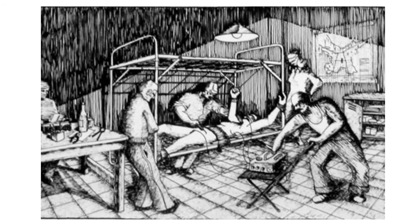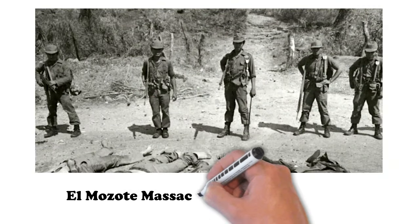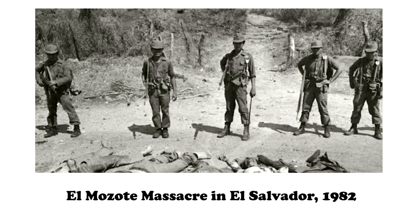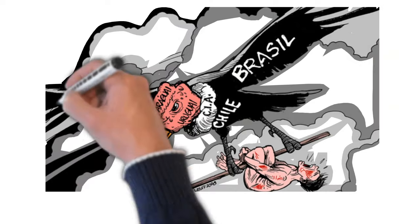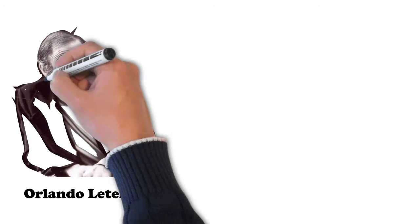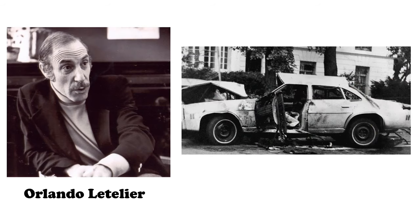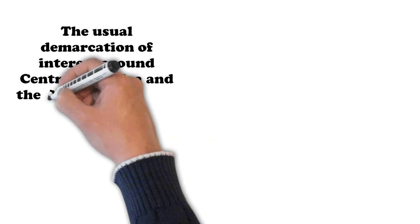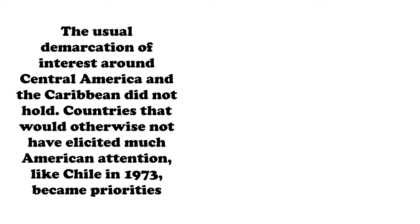It was during this period that some of the worst massacres in Latin American history took place, such as the San Patricio Church Massacre in Argentina in 1976, the El Mozote Massacre in El Salvador in 1982, and the Todos Santos Massacre in Bolivia in 1979, among many others. Dictatorships in the Southern Cone even created a U.S.-backed intelligence program known as Operation Condor, designed to locate and execute dissidents even when abroad. One of the most famous victims was Orlando Letelier, a critic of the Pinochet regime, who died when the car he was driving exploded on Sheridan Circle in Washington, D.C.